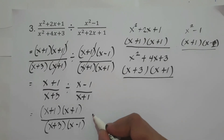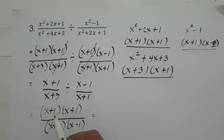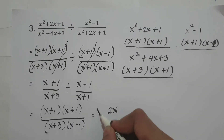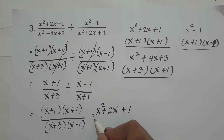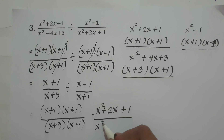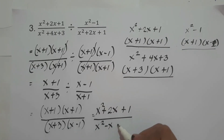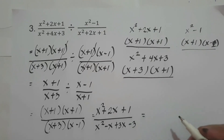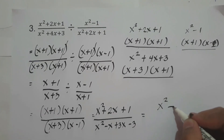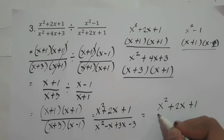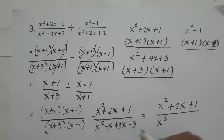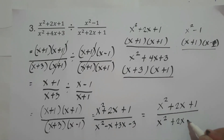To simplify our answer, let us multiply each binomial. x+1 times x+1 gives x² plus 2x plus 1. For the denominator: x times x is x², x times negative 1 is negative x, 3 times x is 3x, and 3 times negative 1 is negative 3. So our final answer is x² plus 2x plus 1 over x² plus 2x minus 3.